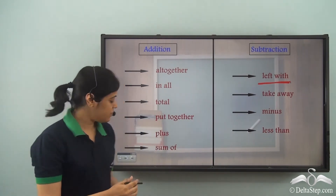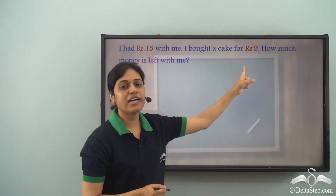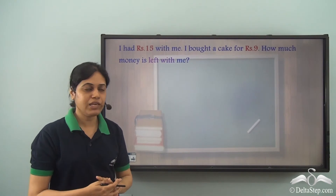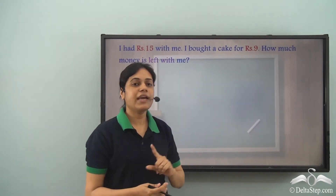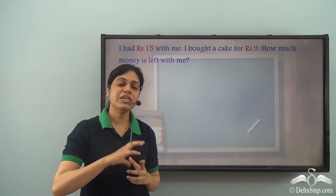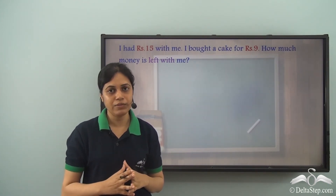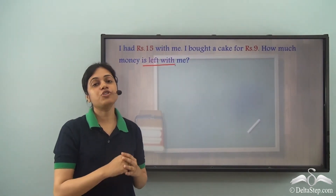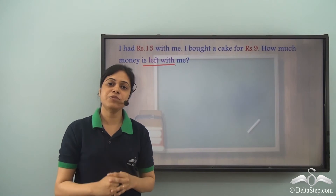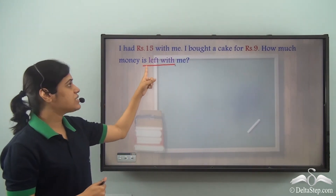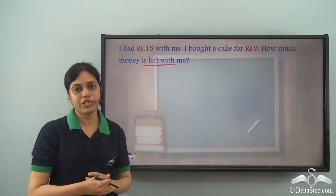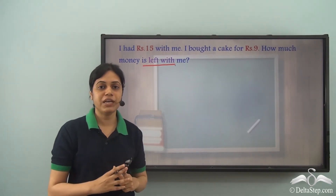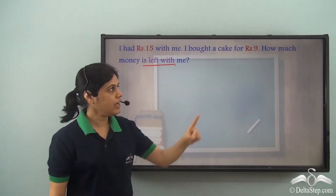Why? Left with means that something has been taken away from me. I had rupees 15 with me, I bought a cake for rupees 9 — that means rupees 9 have been taken away from me. So, taking away means subtraction. In this case, left with indicates subtraction because I need to find how much money is left with me after taking away rupees 9.